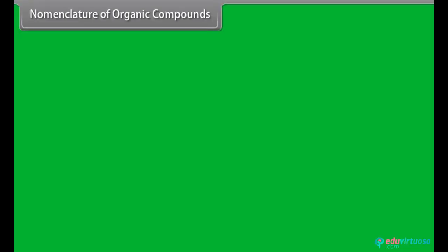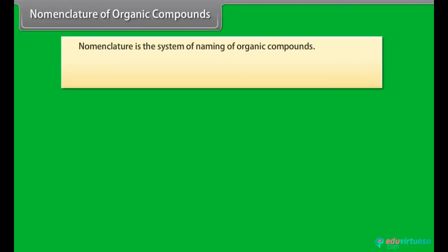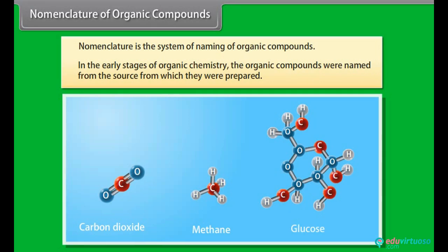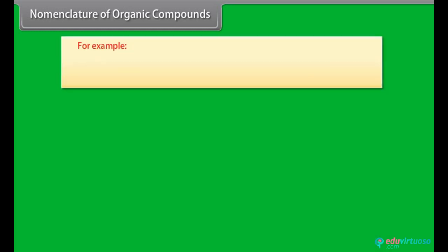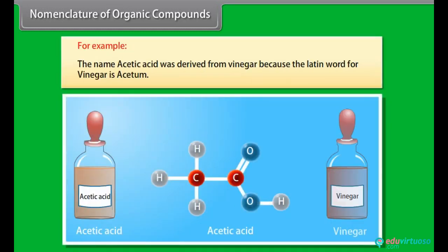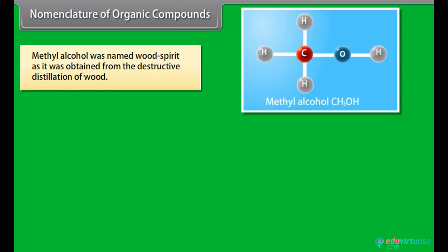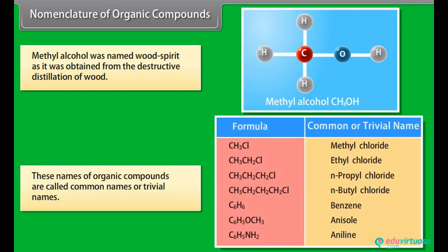Nomenclature of organic compounds: nomenclature is the system of naming of organic compounds. In the early stages of organic chemistry, organic compounds were named from the source from which they were prepared. For example, the name acetic acid was derived from vinegar because the Latin word for vinegar is acetum. Methyl alcohol was named wood spirit as it was obtained from the destructive distillation of wood. These names of organic compounds are called common names or trivial names.